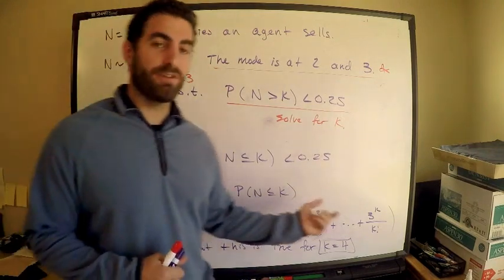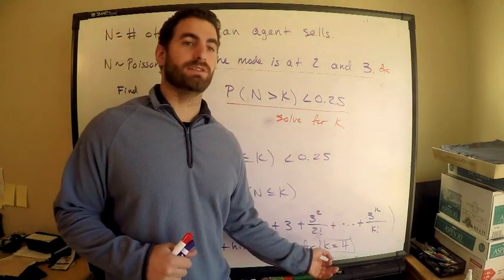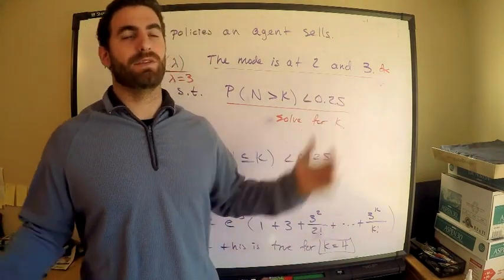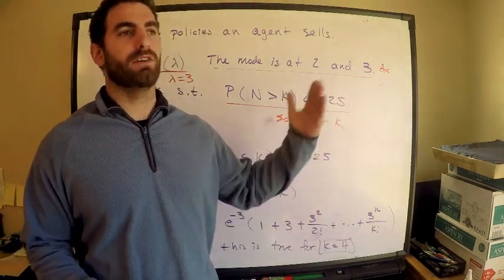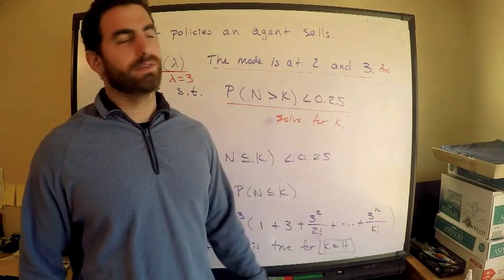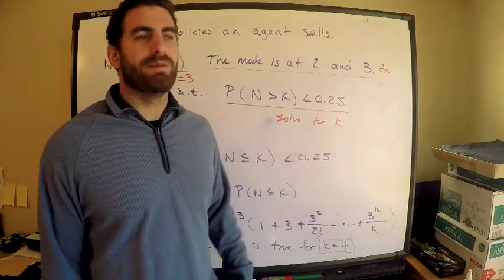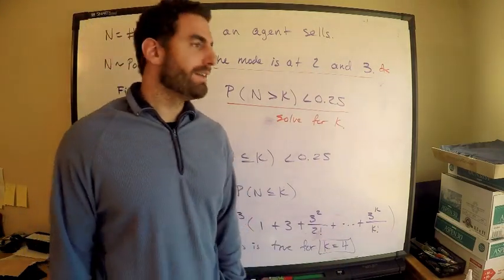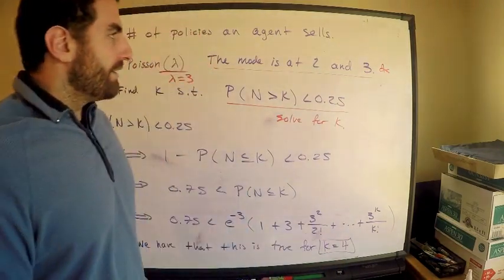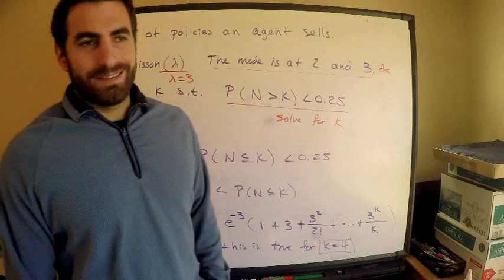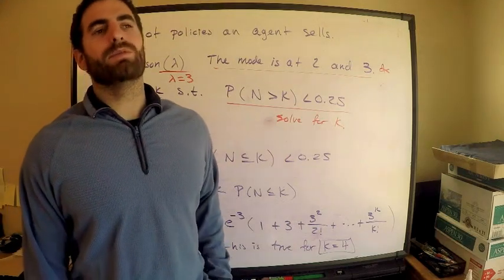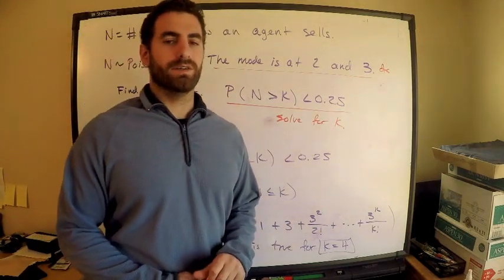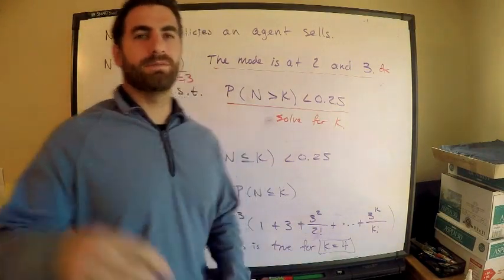Since we want the smallest K, we start from the smallest answer choice and go up. If they wanted the largest, you'd start from the largest and go down. You may have to resort to this technique sometimes because it works — just plug in values and go. Hope this was helpful. Comment on the video, and thank you for subscribing.